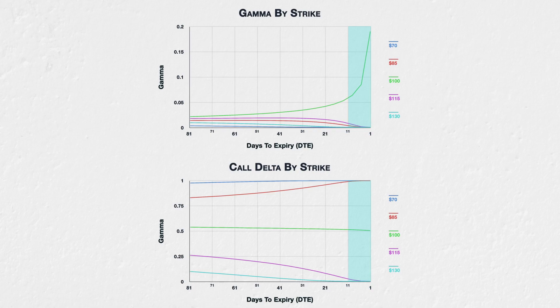For the at-the-money strike of $100, the picture is very different. As the time to expiry approaches zero, the delta of in-the-money call options approaches one, and the delta of out-of-the-money call options approaches zero. The at-the-money strike of $100 could still easily be either, with a $1 change in the underlying price having a large impact on which is most likely with only a small amount of time left. A $1 change in the underlying price can therefore have a large impact on the delta of the option, so the gamma of the at-the-money strike is high as we come into expiration.